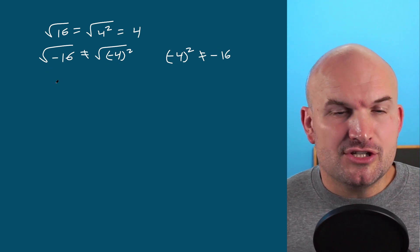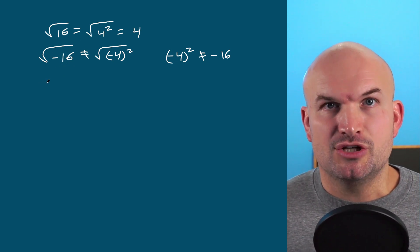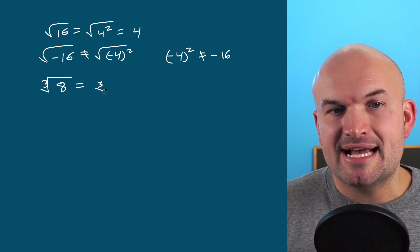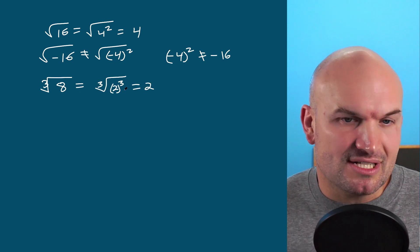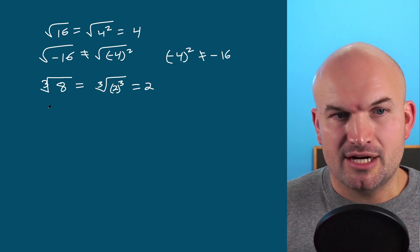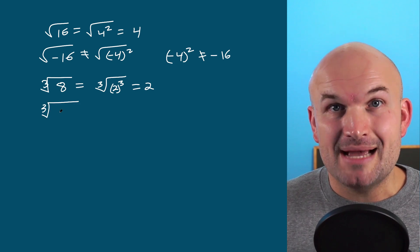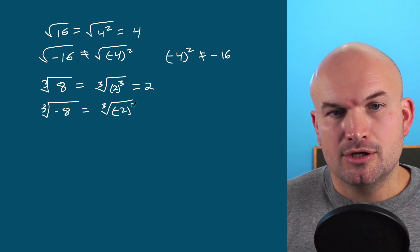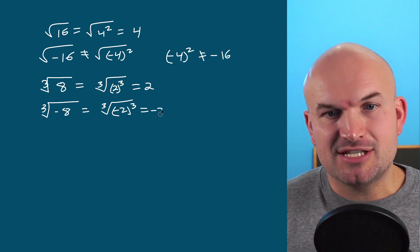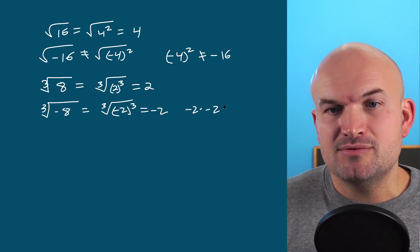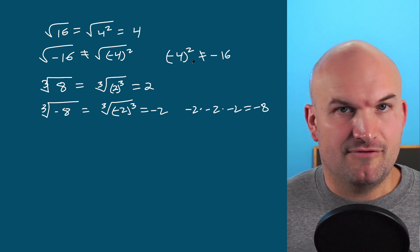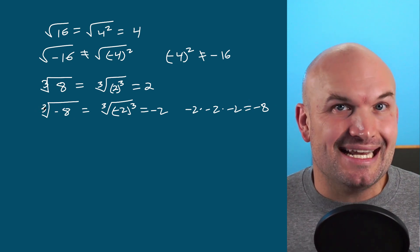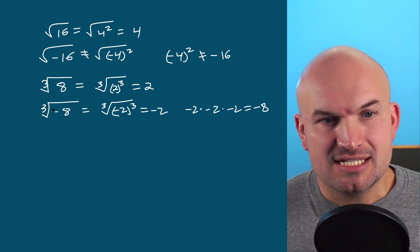Students sometimes transfer this restriction incorrectly to cube roots or any other odd index. If we have the cube root of 8, we rewrite it as the cube root of 2 cubed, which equals 2. The key difference between squaring and cubing is that if you multiply something by itself three times, the result can be negative. So the cube root of negative 8 can be rewritten as the cube root of negative 2 cubed, and the answer is negative 2 — because negative 2 times negative 2 times negative 2 is indeed negative 8. So it works whenever your index is odd.